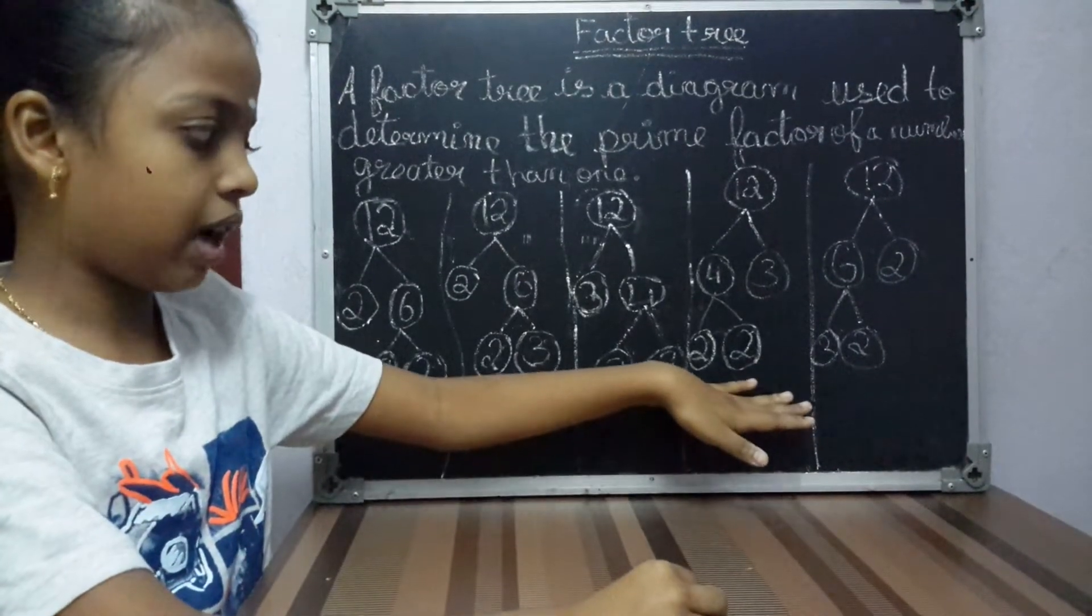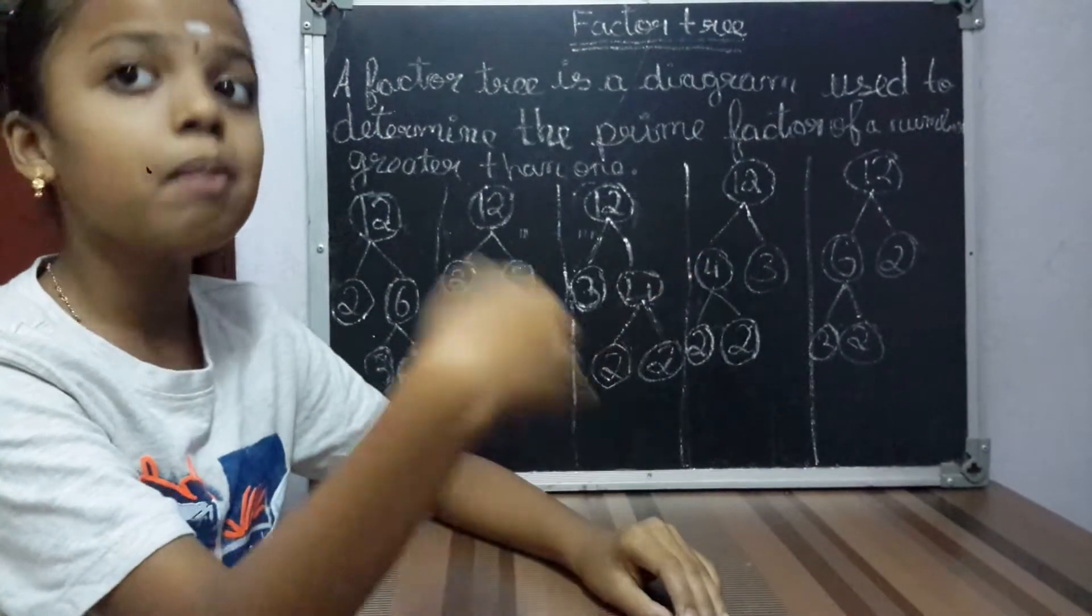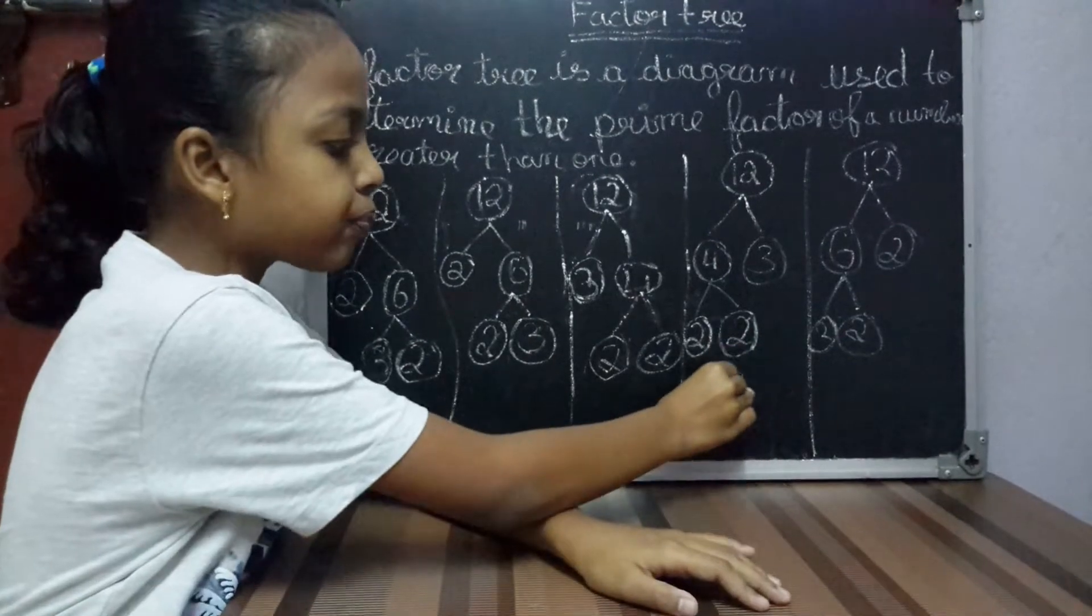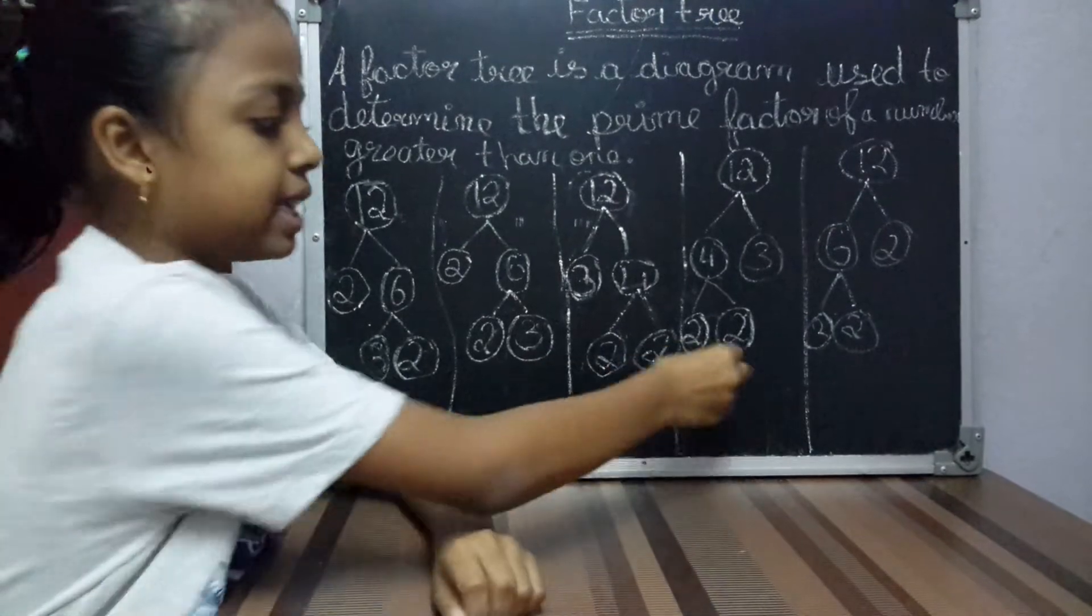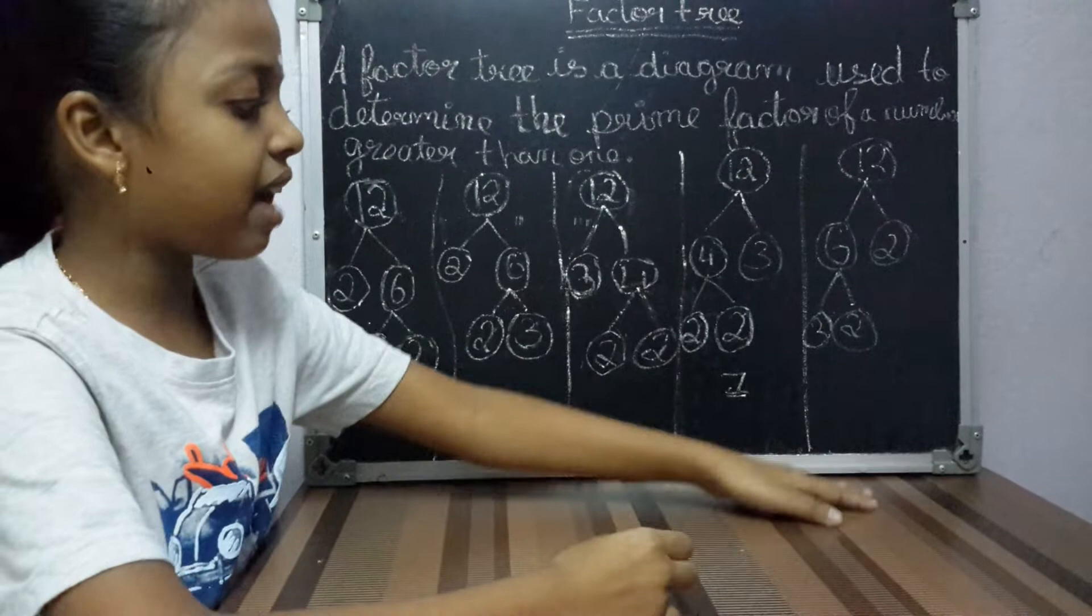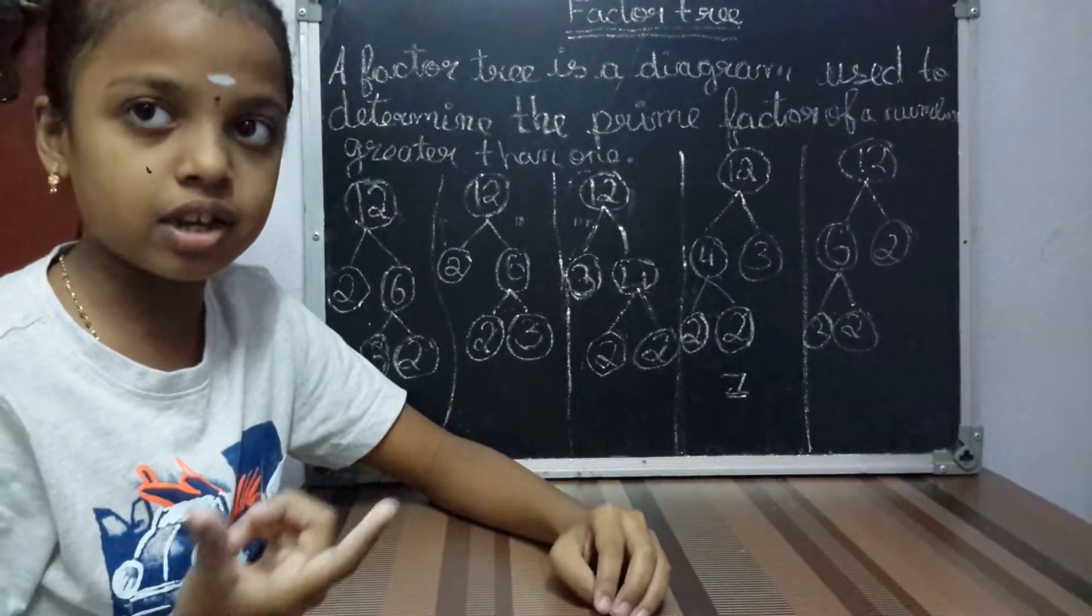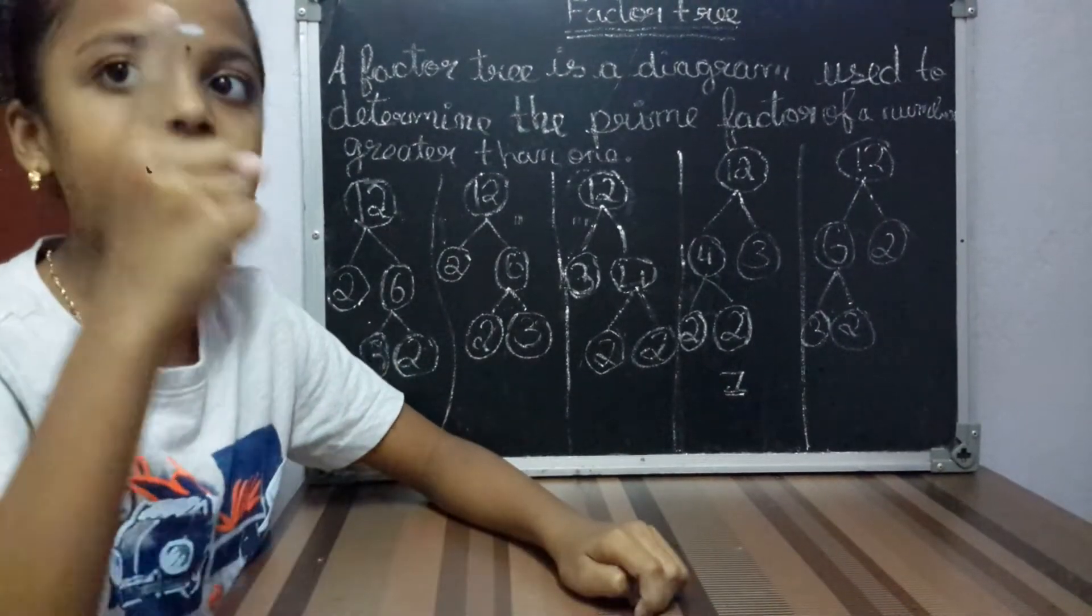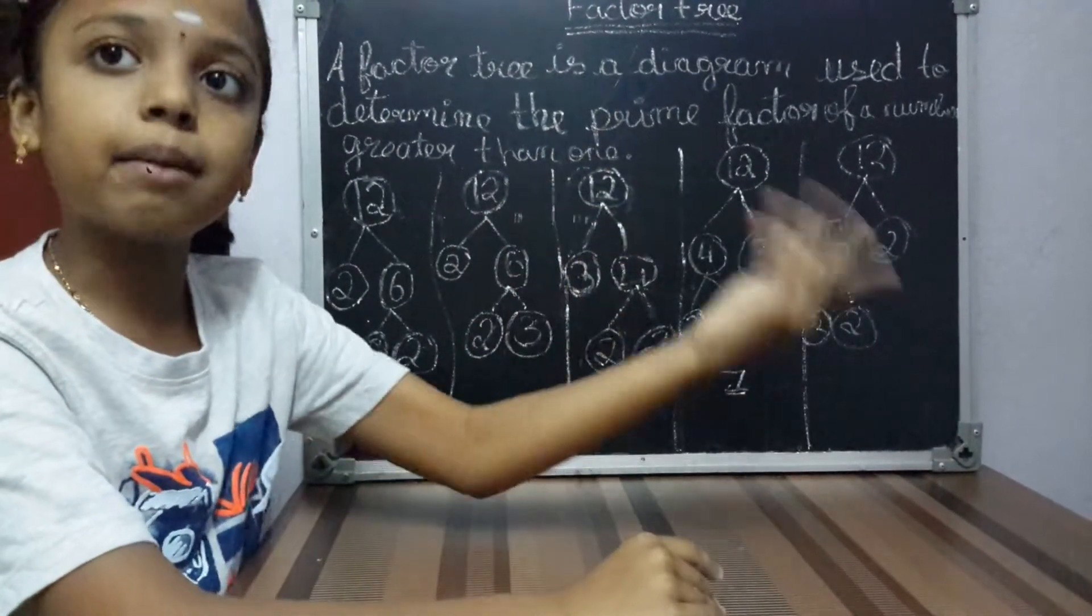First, what is a factor tree? A factor tree is a diagram used to determine the prime factors of a number greater than 1. We have all understood, but one doubt here: what is a prime number? Below 100, all the odd numbers are prime numbers except 1, which is 2. So how can we say they are prime numbers? Every number other than 1 has at least 2 factors: 1 and the number itself.